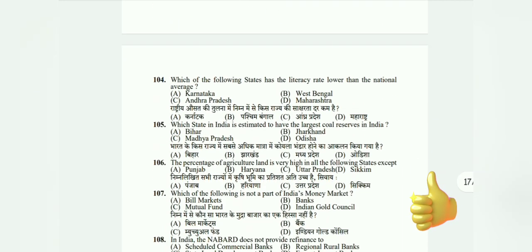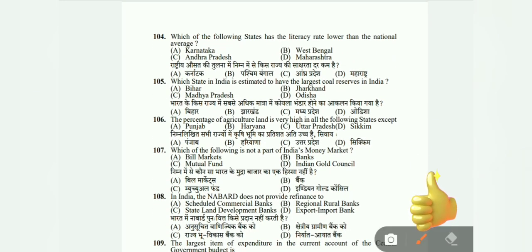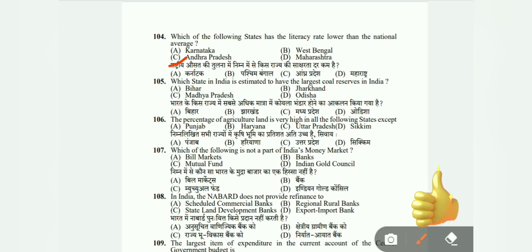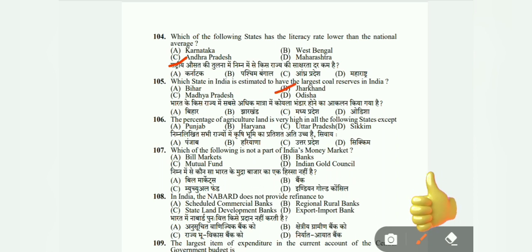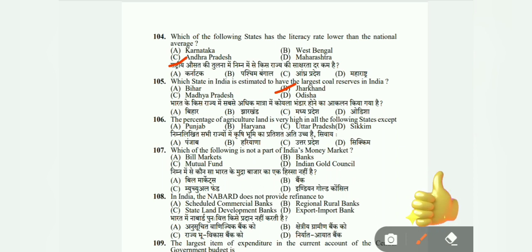Question 104: Which state has a literacy rate lower than the national average — Karnataka, West Bengal, Andhra Pradesh, or Maharashtra? The correct answer is C, Andhra Pradesh. Question 105: Which state in India has the largest coal reserve — Bihar, Madhya Pradesh, or Jharkhand? The correct answer is Jharkhand. Question 106: The percentage of agricultural land is very high in the following states except — Punjab, Haryana, Uttar Pradesh, or Sikkim? The correct answer is D, Sikkim.